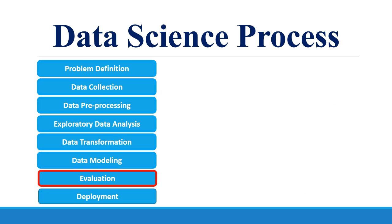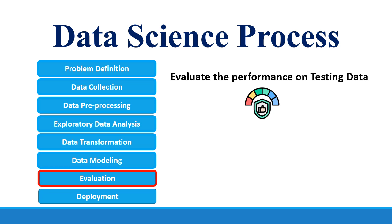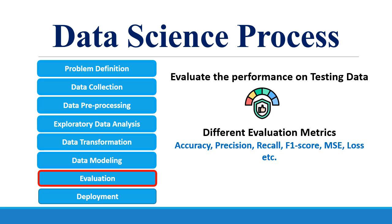During the training and optimization process, a limited set of evaluation metrics are used to evaluate the performance of the model on the validation set. Once the model is trained, we then evaluate the performance of the model on the testing set of data. This includes a list of evaluation metrics to have a bigger picture of the model's performance.